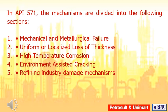The mechanisms in API 571 are divided into the following sections: mechanical and metallurgical failure, uniform or localized loss of thickness, high temperature corrosion, environment assisted cracking, and refining industry damage mechanisms.